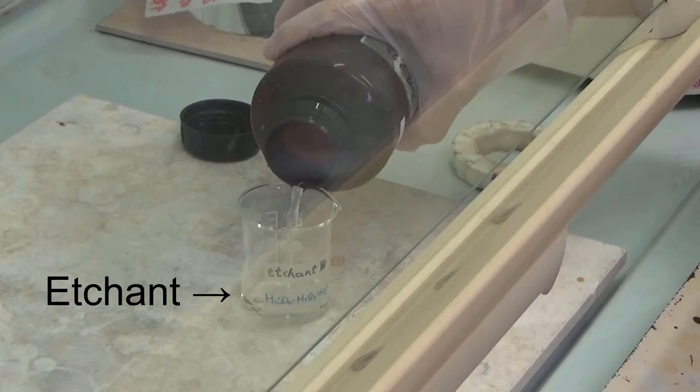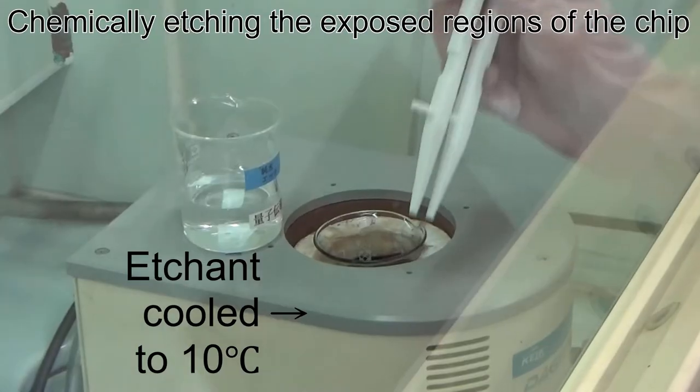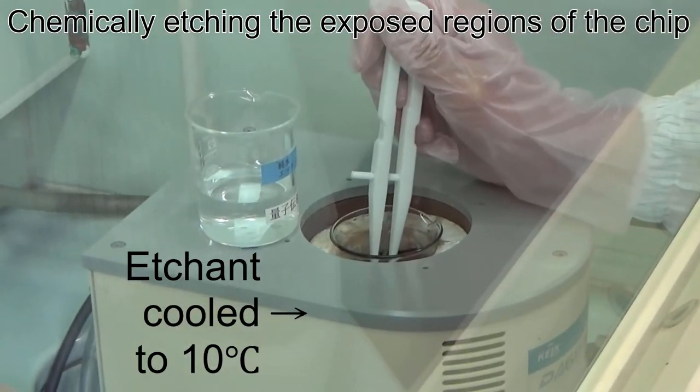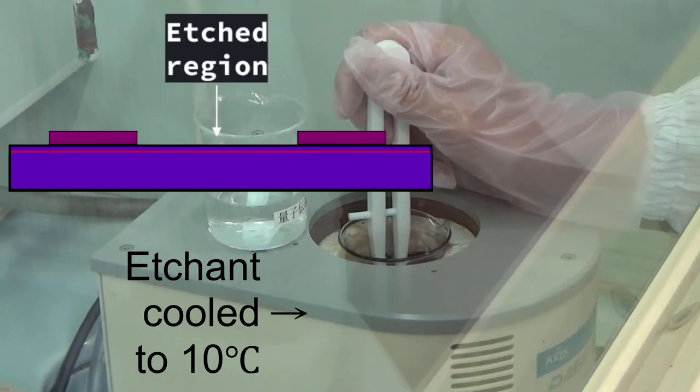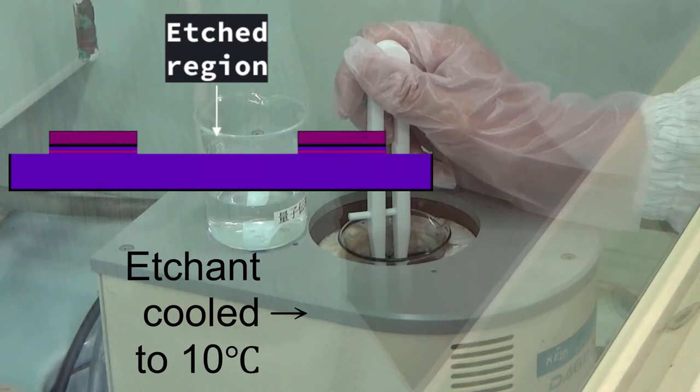We next place the chip in an acid solution to chemically etch away the exposed surface regions. With the right duration of etching time, we can remove the semiconductor layers making up the quantum well.